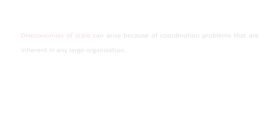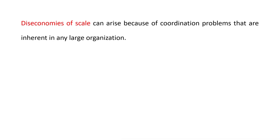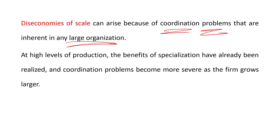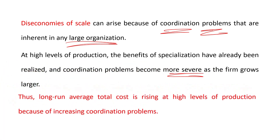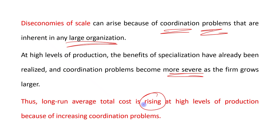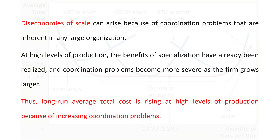The opposite case is that diseconomies of scale can arise because of coordination problems that are inherent in any large organization. At high levels of production, the benefits of specialization have already been realized and coordination problems have become more severe as the firm grows larger. That is the reason long run average total cost is rising at high levels of production — because of increasing coordination problems.